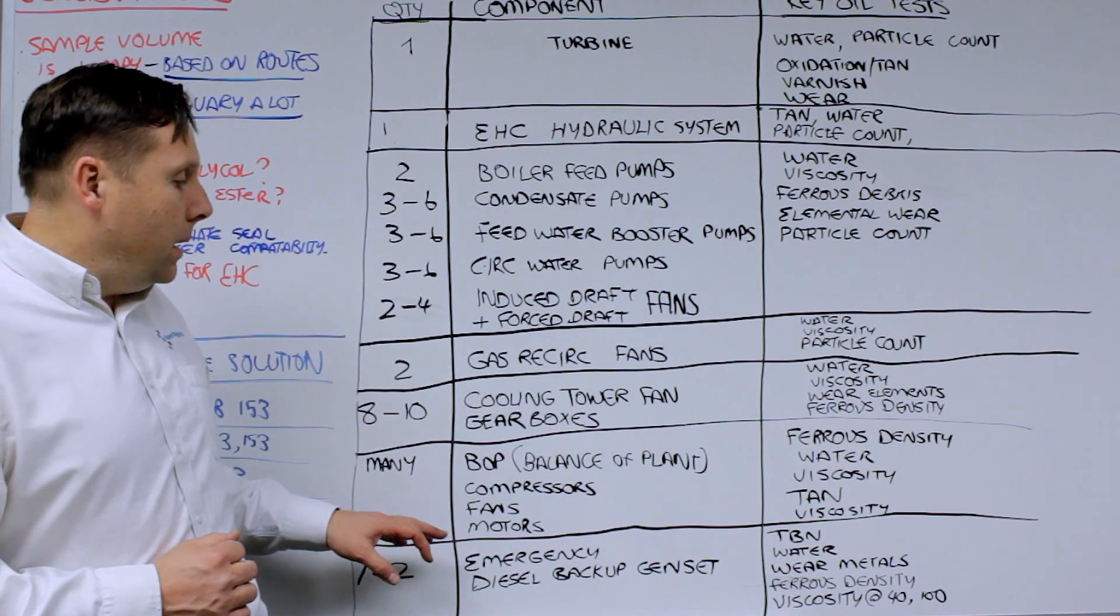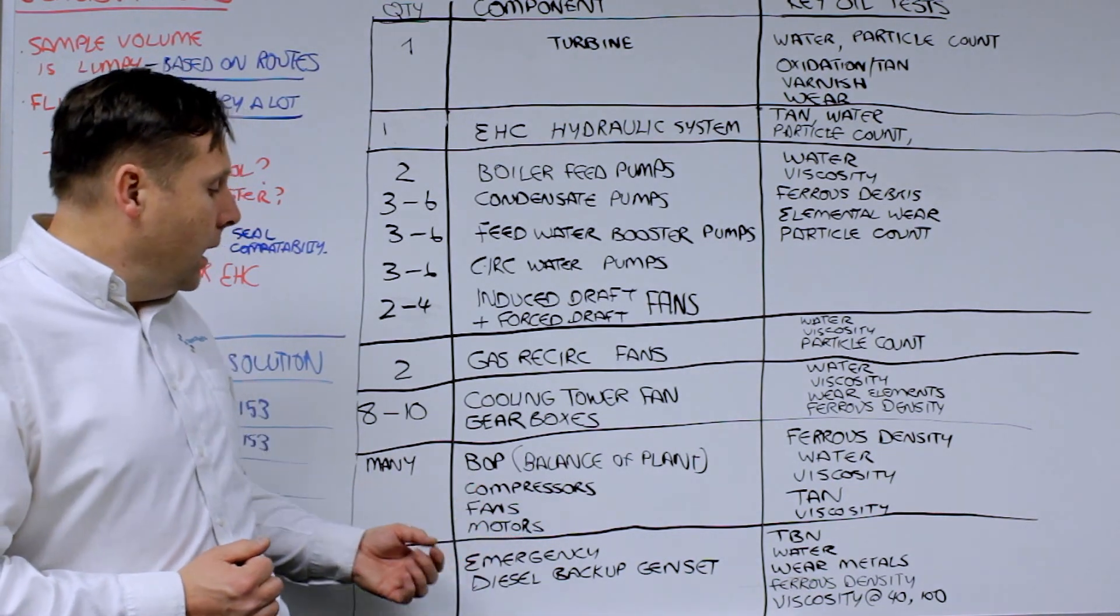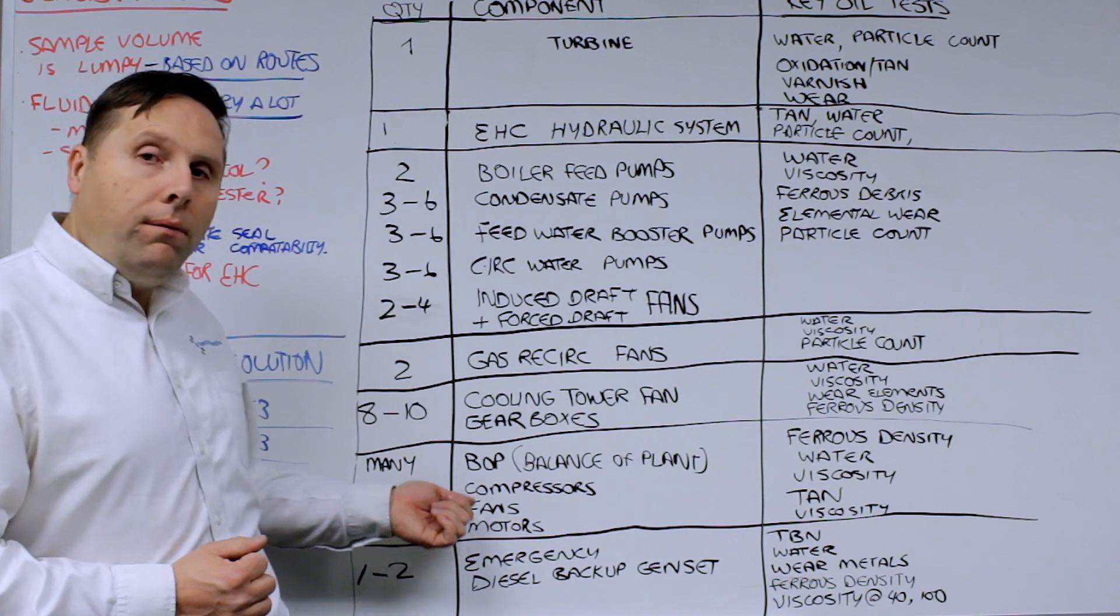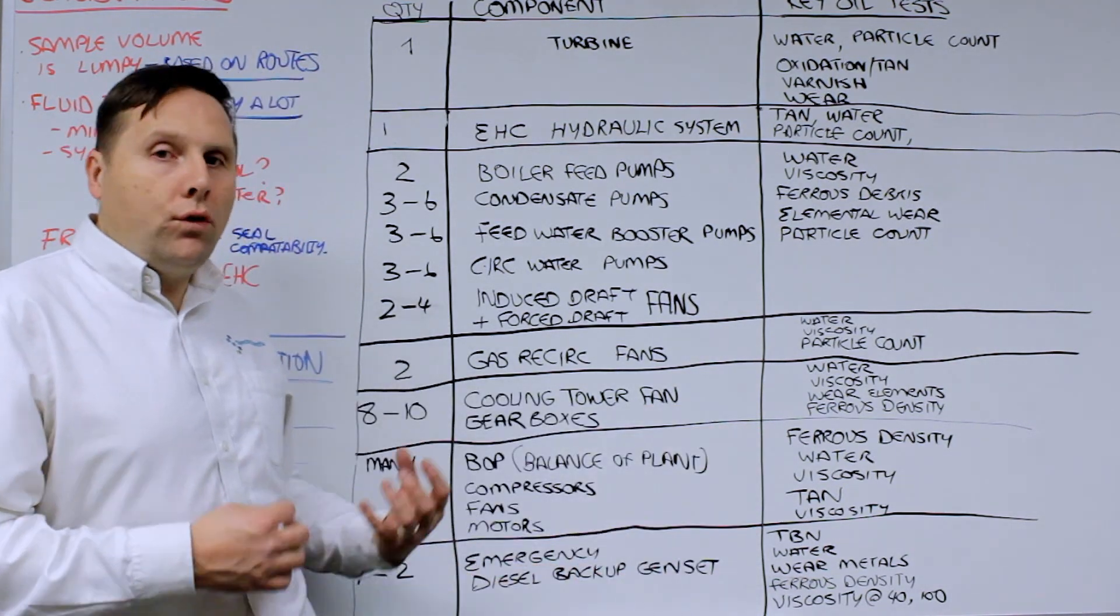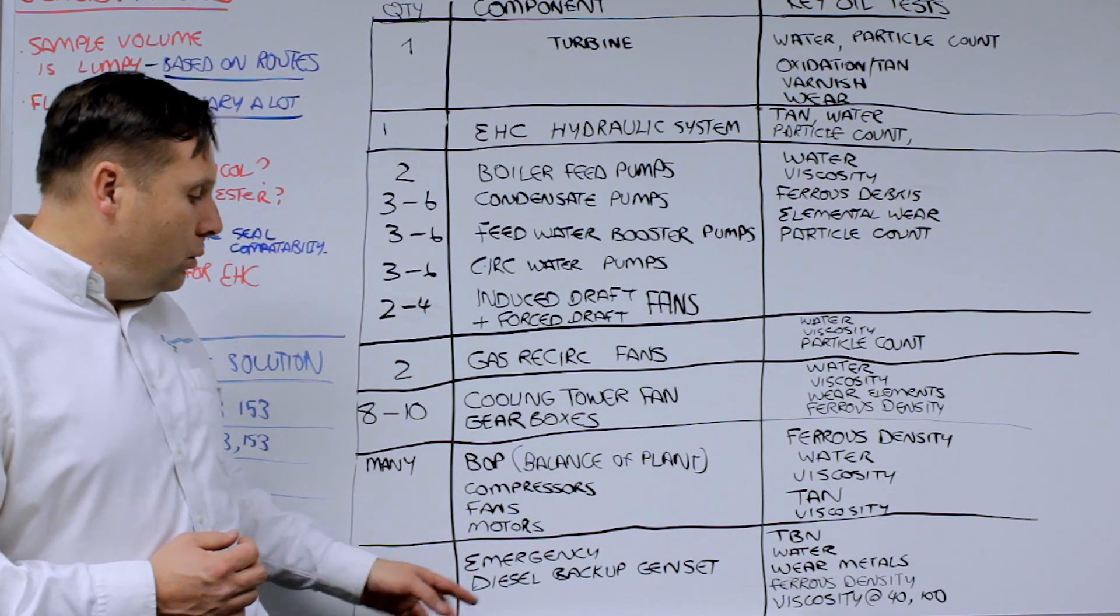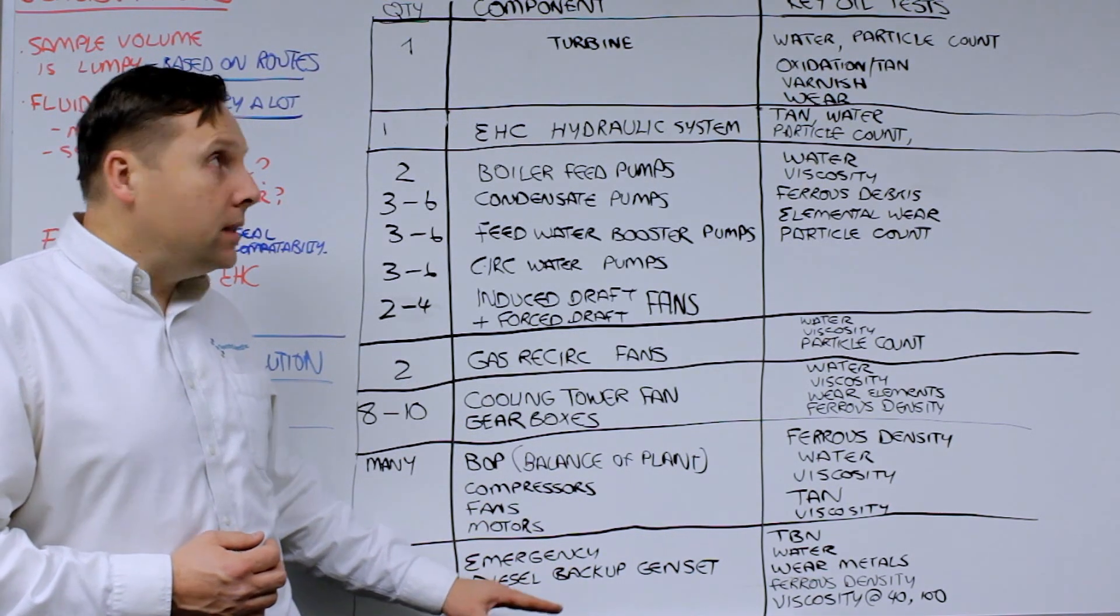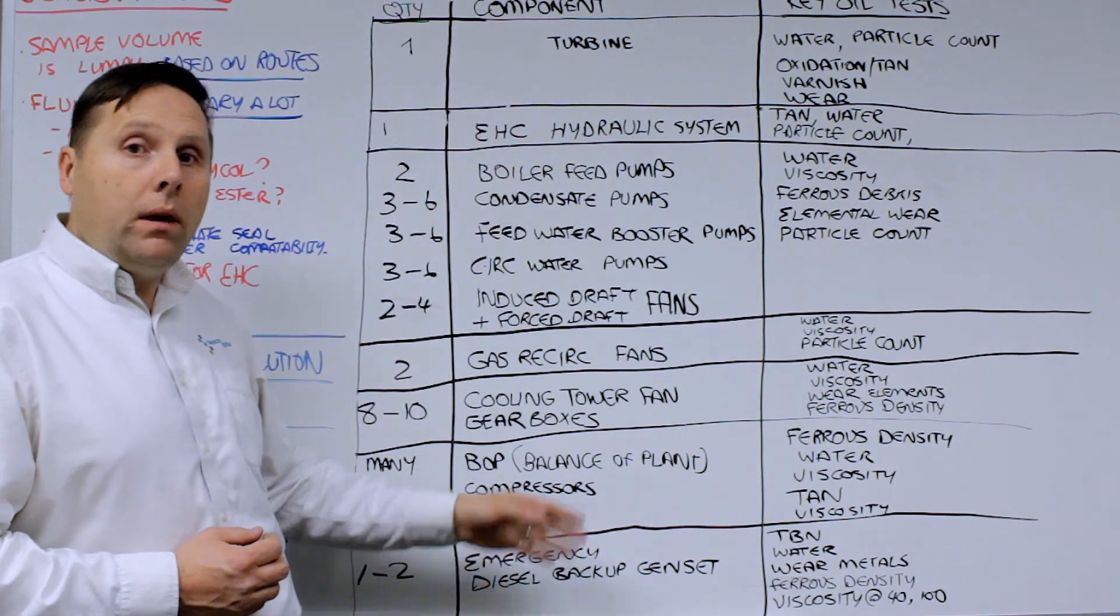You may have many smaller pieces of equipment, which we call balance of plant. These can be sub-compressors, fans, motors, small systems, and all of these need to be watched for condition monitoring. And then you can have one to two emergency diesel backup gen sets just to support the turbine in the event of a trip.